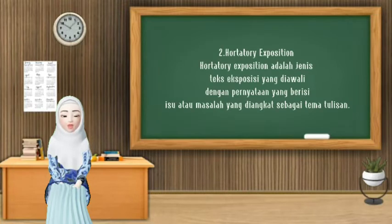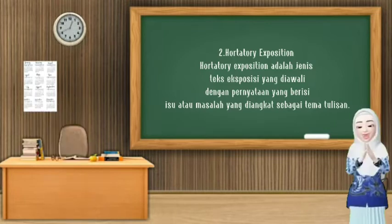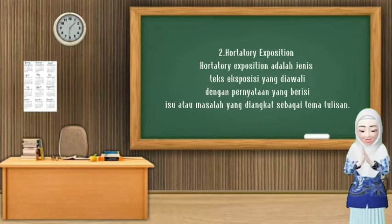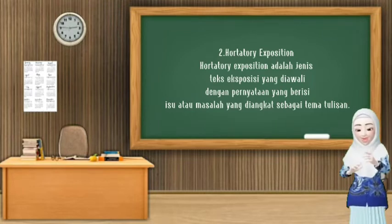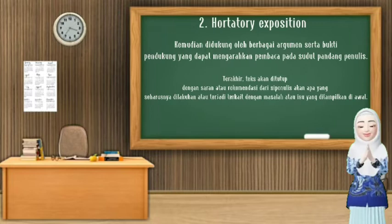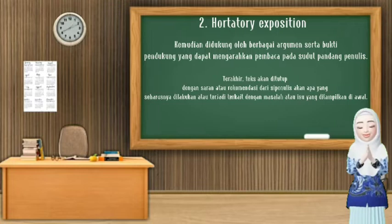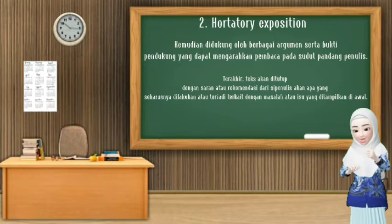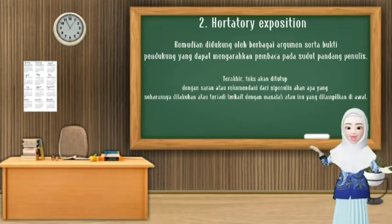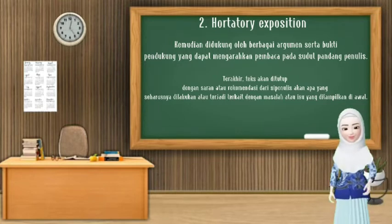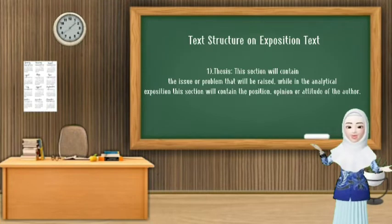Jenis yang kedua adalah hortatory exposition. Hortatory exposition adalah jenis teks exposition yang diawali dengan pernyataan yang berisi isu atau masalah yang diangkat sebagai tema utama. Kemudian, didukung oleh berbagai argumen serta bukti pendukung yang dapat mengerahkan pembaca pada sudut pandang penulis. Terakhir, teks akan ditutup dengan saran atau rekomendasi dari si penulis akan apa yang seharusnya dilakukan atau terjadi terkait dengan masalah atau isu yang ditampilkan di awal.